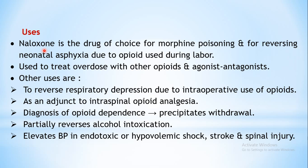Respiratory depression in neonates can be reversed by naloxone. When opioids are used during labor for obstetric procedures, they may produce neonatal asphyxia, which can be reversed by naloxone - making it the first-line treatment. It is also used to treat overdose of other opioids and agonist-antagonists except buprenorphine, since for buprenorphine it can only prevent but not reverse the action. It can be used to reverse respiratory depression caused by intraoperative opioids and as an adjunct to intraspinal opioid analgesia.